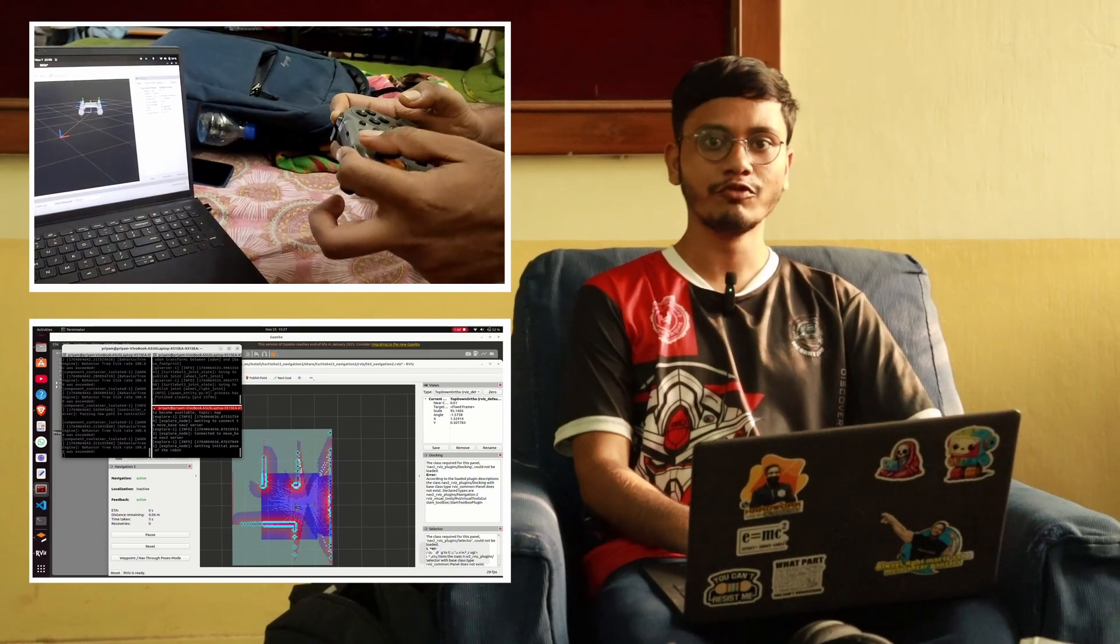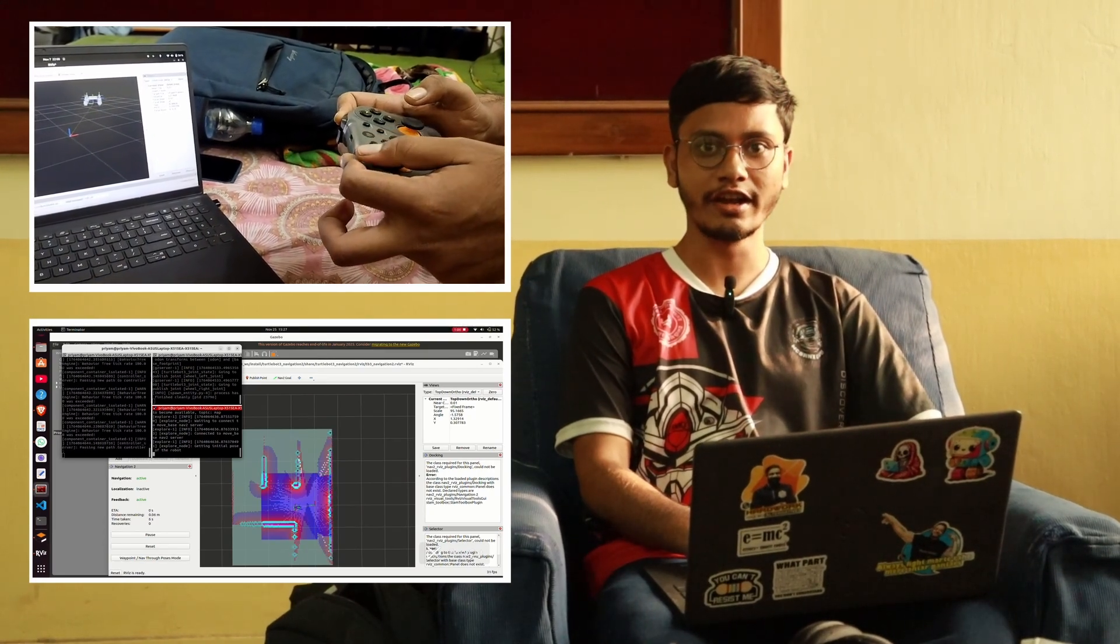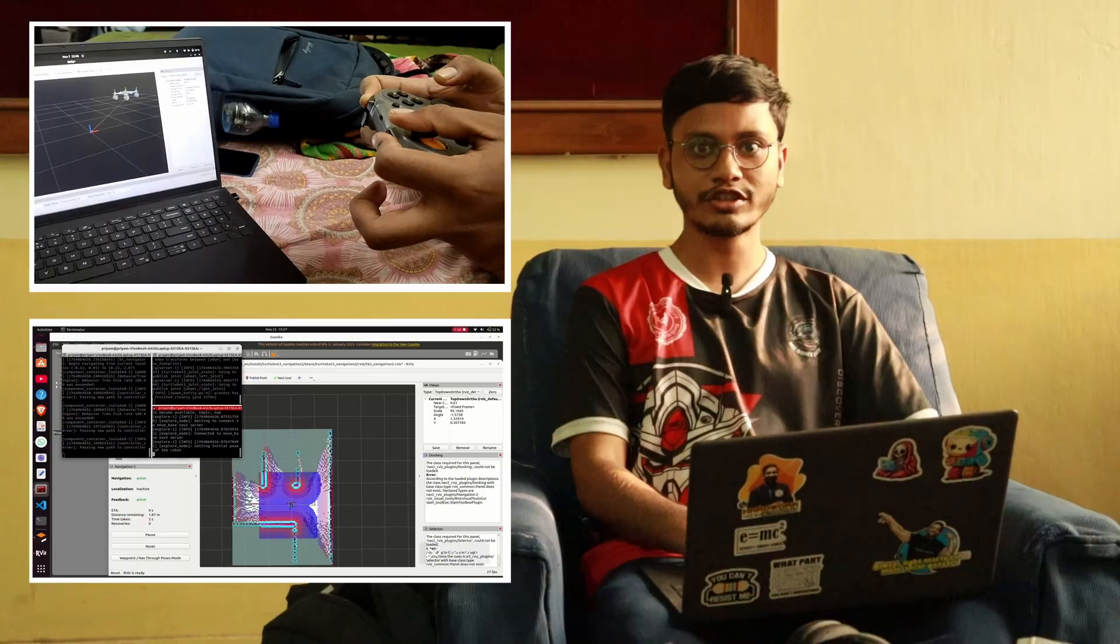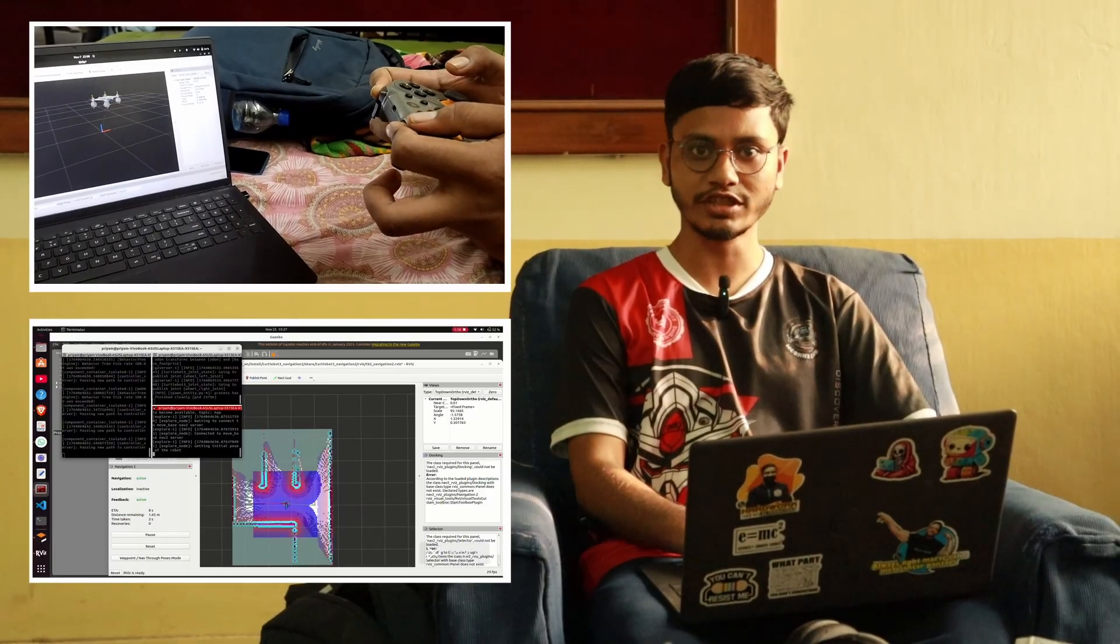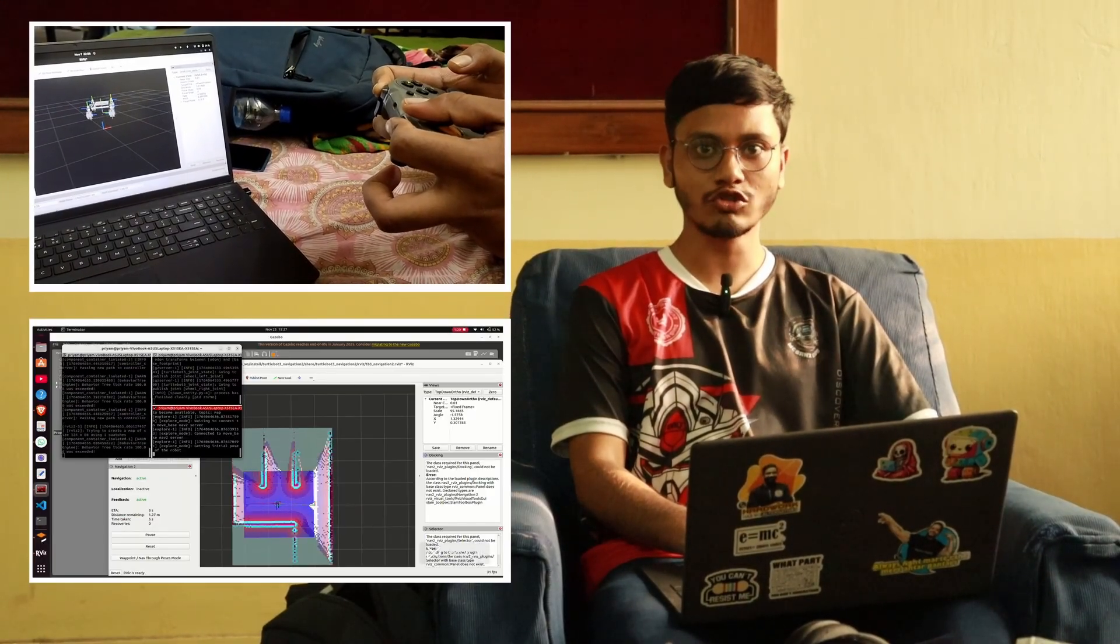For autonomous mode, we combine a 2D LiDAR and the Intel RealSense D435 to create a costmap using the NAV2 stack. The rover autonomously plans its own path around obstacles.